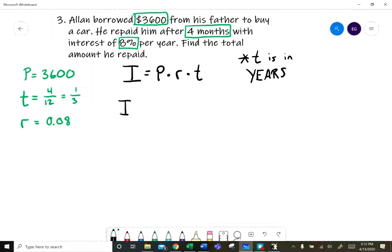Let's plug this into our interest formula. Interest equals the principal times the rate, 0.08, times the time, which is 1 over 3. Remember, fraction means division.